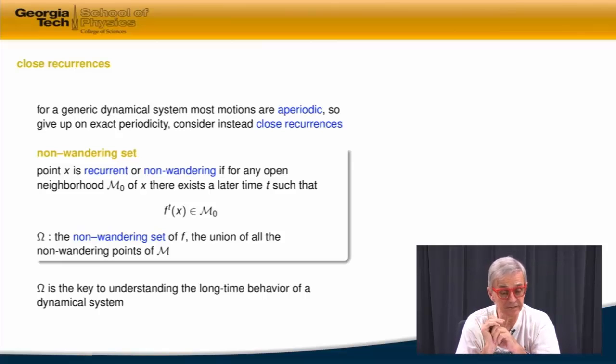What's very interesting in dynamics is so-called non-wandering sets. So this is a set of all points which are recurrent. If I wait long enough, I'll come to the neighborhood with some precision. And it's these non-wandering sets which are the key of understanding.